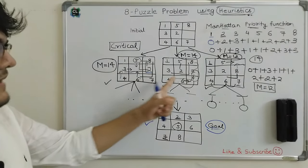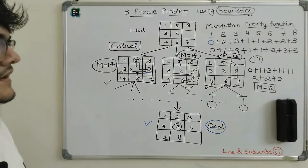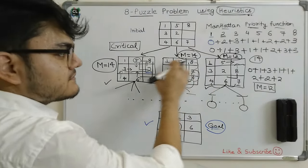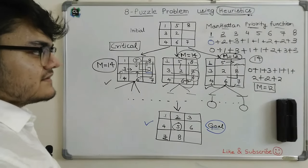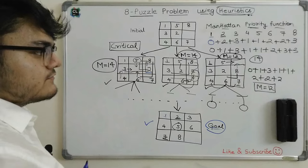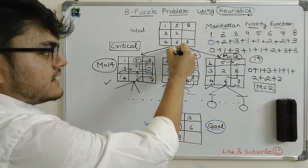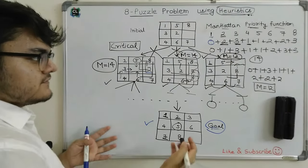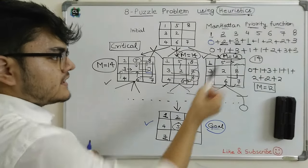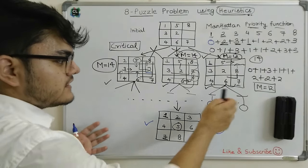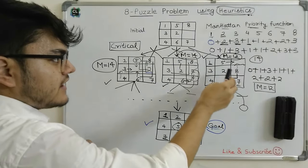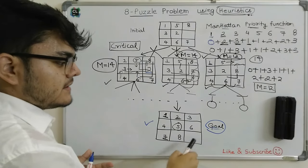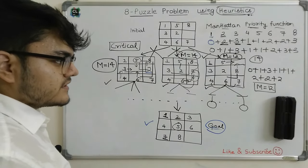So now we have three Manhattan values: 14, 12, and 14. The AI agent uses these values to make a decision — the minimum Manhattan value gets higher priority. So the agent will not explore the two branches with value 14 and will explore the branch with value 12. We will recalculate the Manhattan value at each step and use it as a heuristic guess until we finally reach the goal. That's all for this tutorial, thanks for watching.